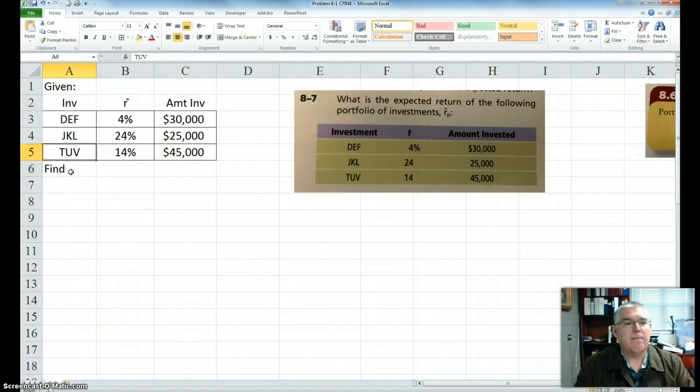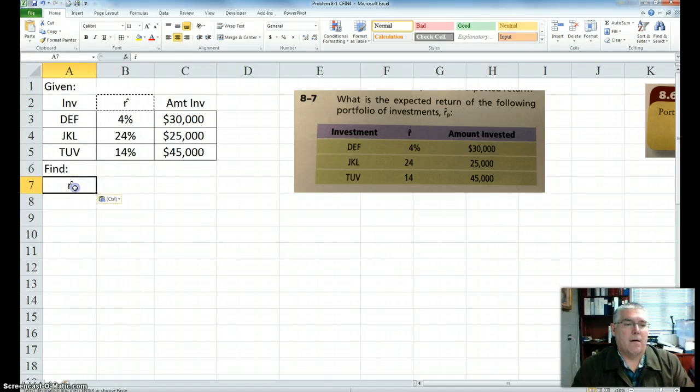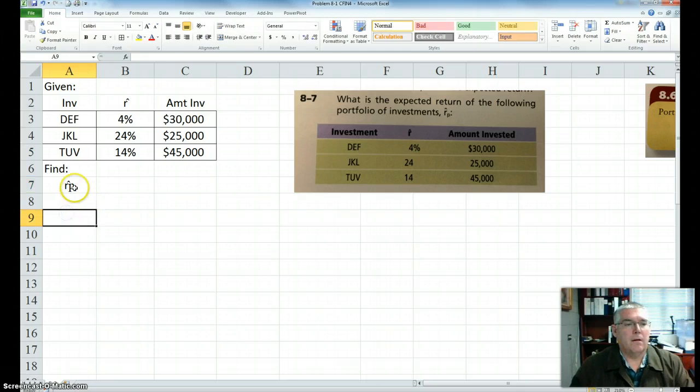We want to find, we want to find the expected return of the portfolio. So I'm going to put a P here, and I'm going to subscript that, so I'm going to Ctrl-Shift-F.